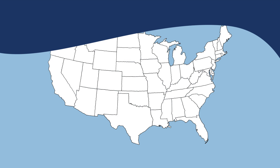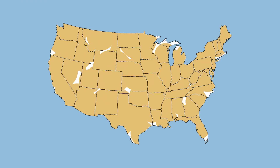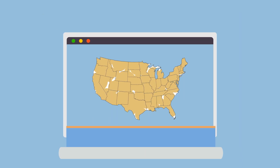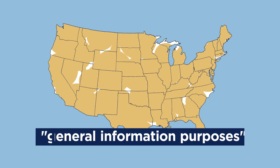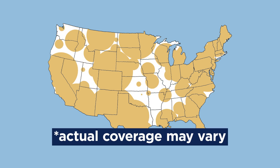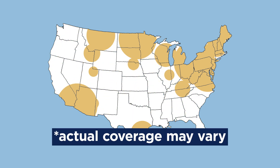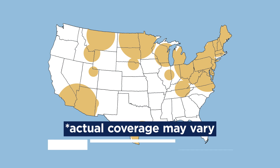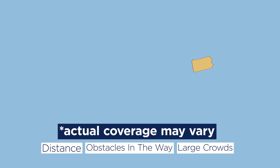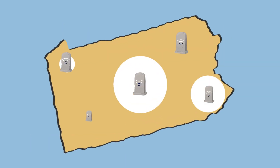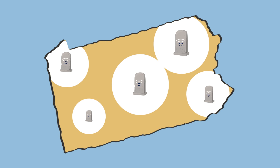Most wireless service providers offer network area coverage maps on their websites and in stores, though these maps usually carry disclaimers that they are for general information purposes and actual coverage may vary, based on the reasons mentioned earlier. Dead zones can occur even in areas that the coverage maps appear to show as covered.